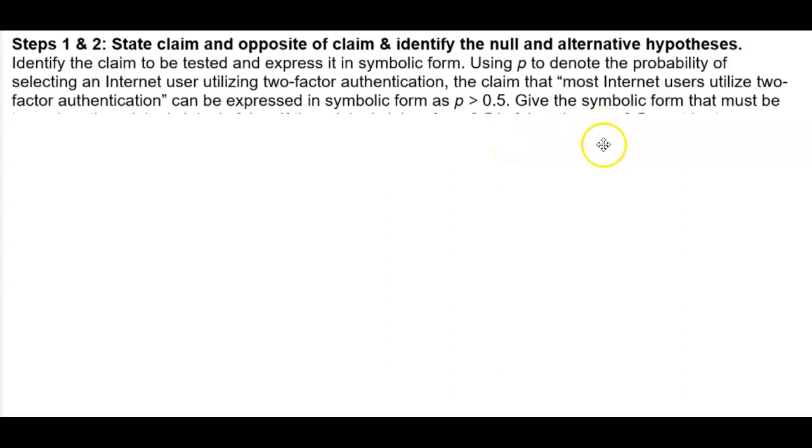Give the symbolic form that must be true when the original claim is false. If the original claim of P is greater than 0.5 is false, then P which is less than or equal to 0.5 must be true, which is the opposite of the claim.